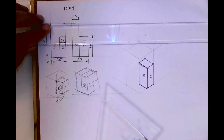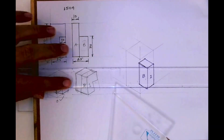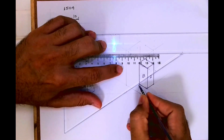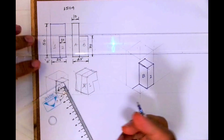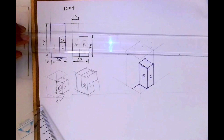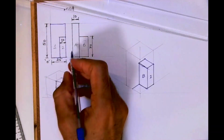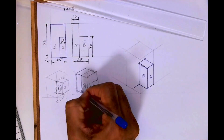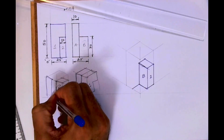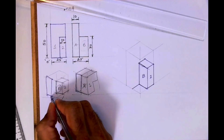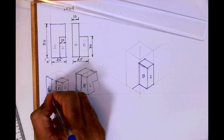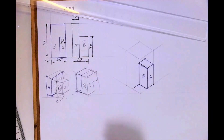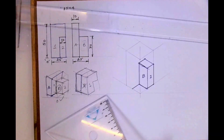This is part B. To draw part one, you'll draw this line over here which is 15 mm. See, this is part A here. So this is how it will come, and this is part one.